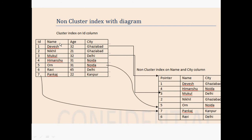When we create a non-clustered index on name and city columns, it creates a virtual table. As you can see here, the virtual table contains data sorted based on name and city: Devesh, Manshu, Mukul, Nikhil, Om, Pankaj, and Ravi — so data has been sorted in this way.